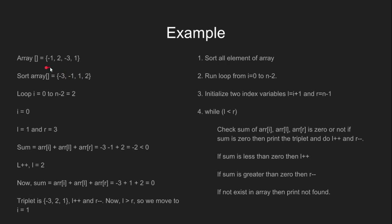Let's run our algorithm on this example. First, we sort the array. The sorted array becomes this. Then we loop from i equal to 0 to n-2, which is 2 in this case. Let's begin with i equal to 0. When i equal to 0, the value of l and r is 1 and 3 respectively, because l is equal to i plus 1 and r is equal to n-1. The sum of the ith, lth and rth term is less than 0, so we increment l. Now l becomes 2. The sum of the ith, lth and rth term now becomes 0. Therefore, our first triplet becomes minus 3, 2 and 1.